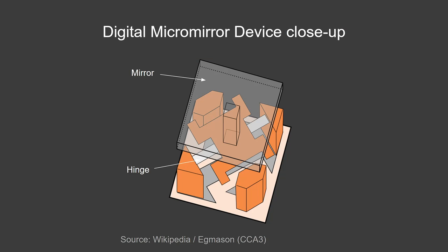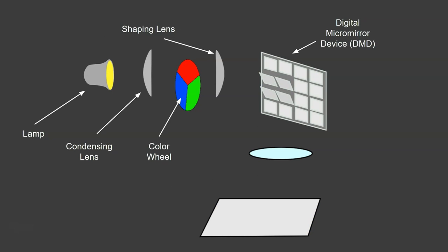...electromechanical tiltable mirrors. So if you pass a charge through any of those individual mirrors on that device, then they will either tilt or not tilt depending on the charge that you pass through, and that allows light to be directed or not directed depending on what you want onto an enlarging lens.